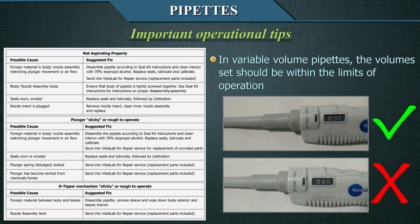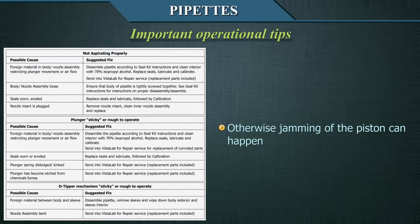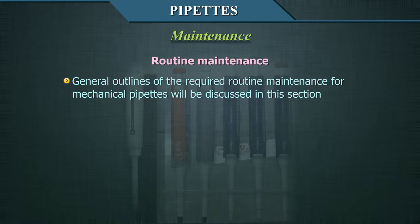In variable volume pipettes, the volume set should be within the limits of operation; otherwise, jamming of the piston can occur.